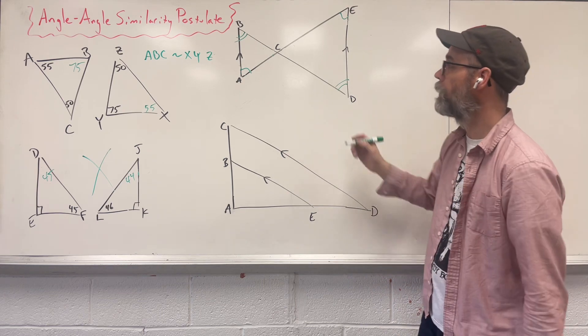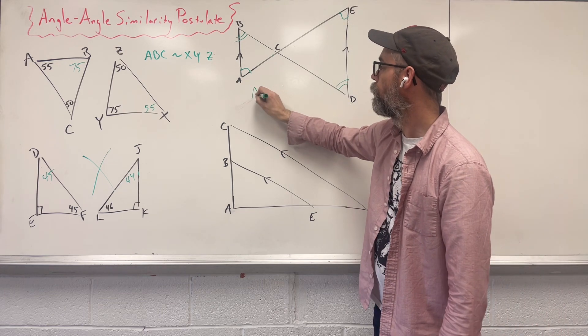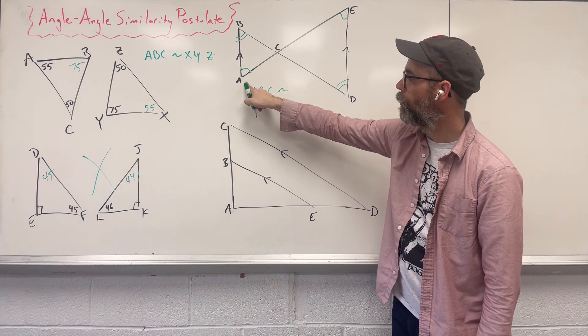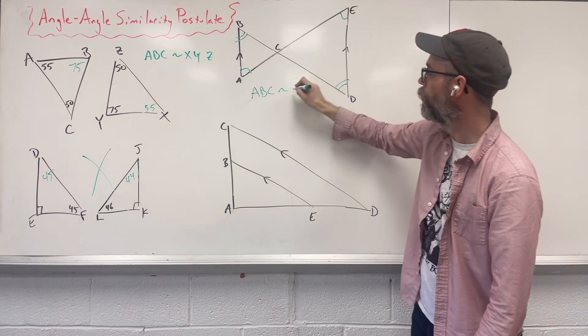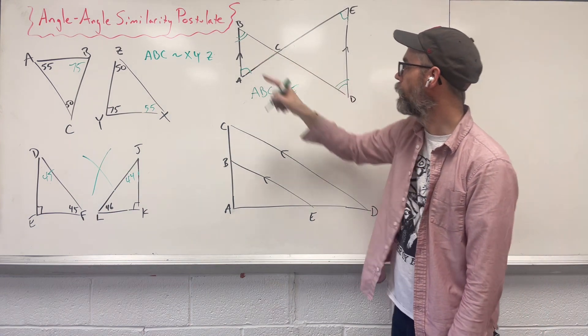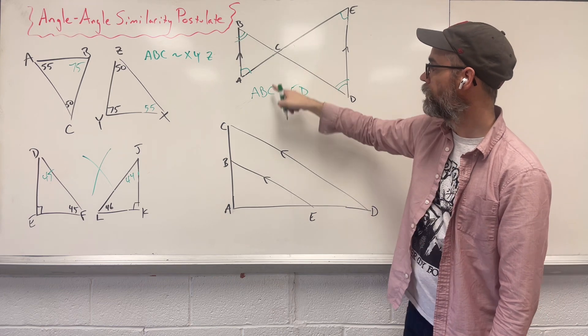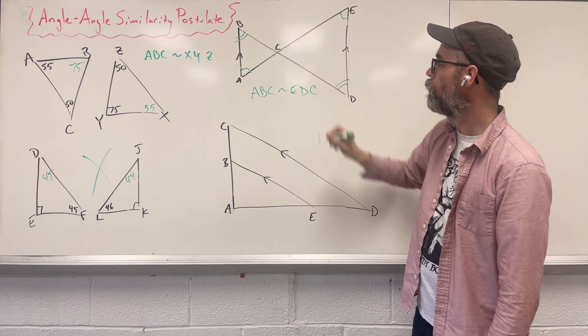So let's come up with a similarity statement. We can say triangle ABC is similar to, so A matches up with the one arch up here, one arch. E, two arches. B is D. And then our missing C has nothing here. We'll put that there.